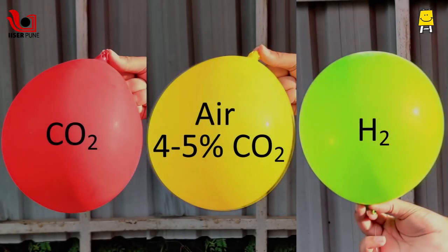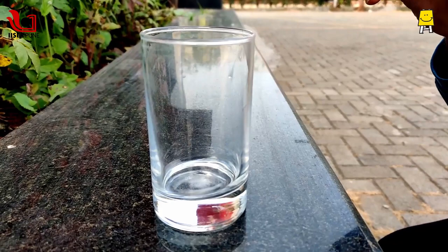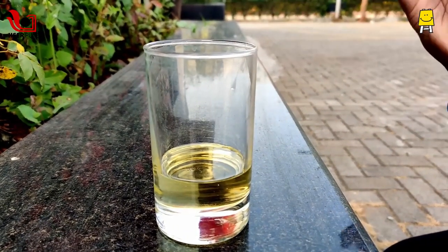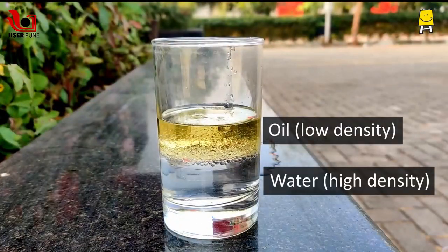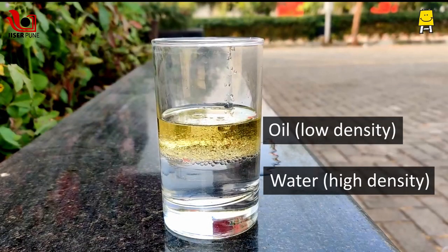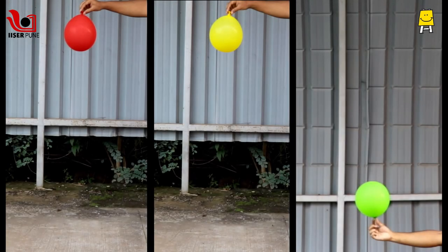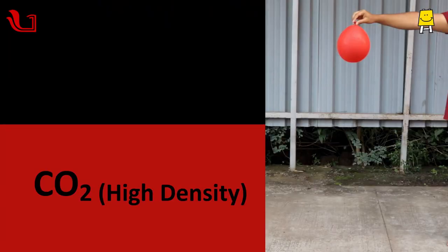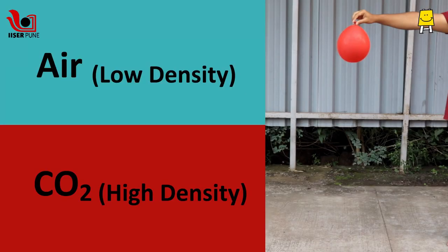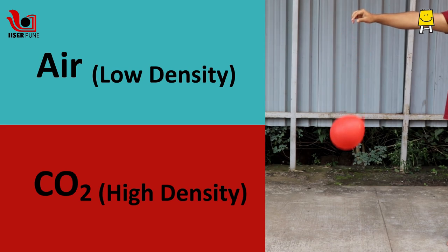Now that you know the gaseous content of each of these balloons, let's understand why they sink or float. Do you remember the simple oil and water density experiment? Oil has lesser density than water, hence it floats on top of water. Like liquids, gases also have density. And this is the reason behind the strange behavior of these balloons. The density of CO2 is more than that of air, hence the red balloon sinks in air.